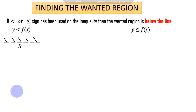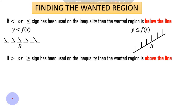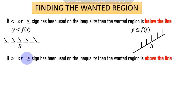Moving to the second grouping: greater than and greater than or equal to. For the greater than sign we draw a dotted line, and for greater than or equal to we draw a solid line. These two signs have one thing in common when finding the wanted region — the wanted region is above the line. So you shade below the line.